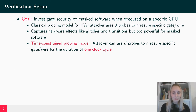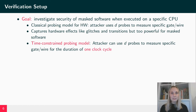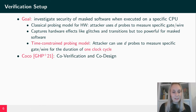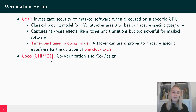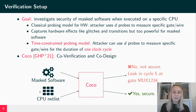Instead, we decided to stick to the time-constrained probing model, where the attacker can use D probes — the same as in the classical probing model — to measure a specific gate or wire, but only for the duration of one clock cycle. The attacker can distribute these probes across multiple clock cycles or multiple wires and gates. The time-constrained probing model is applied in previous work on the COCO verification tool, which we will also apply for our analysis.